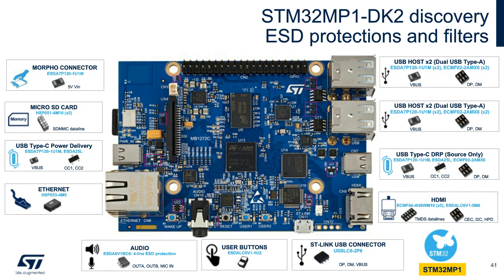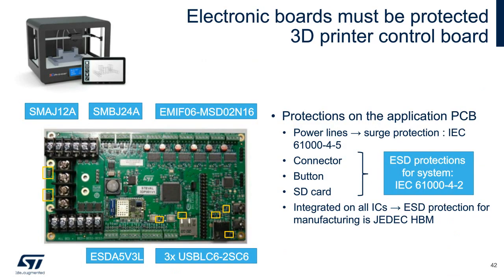Any electronic board must be protected. This second example shows a 3D printer control board. On this board, both input power lines of 12 V and 24 V are protected against surge according to IEC 61000-4-5, as you can see on the left side of the PCB layout. In addition, there are several ESD protection devices on the board: ESDA 5V3L is used for the user button; EMIF 06 is protecting the SD card slot, including an EMI filter; and finally, USB LC6 protection devices are used for all three USB connectors on the PCB.